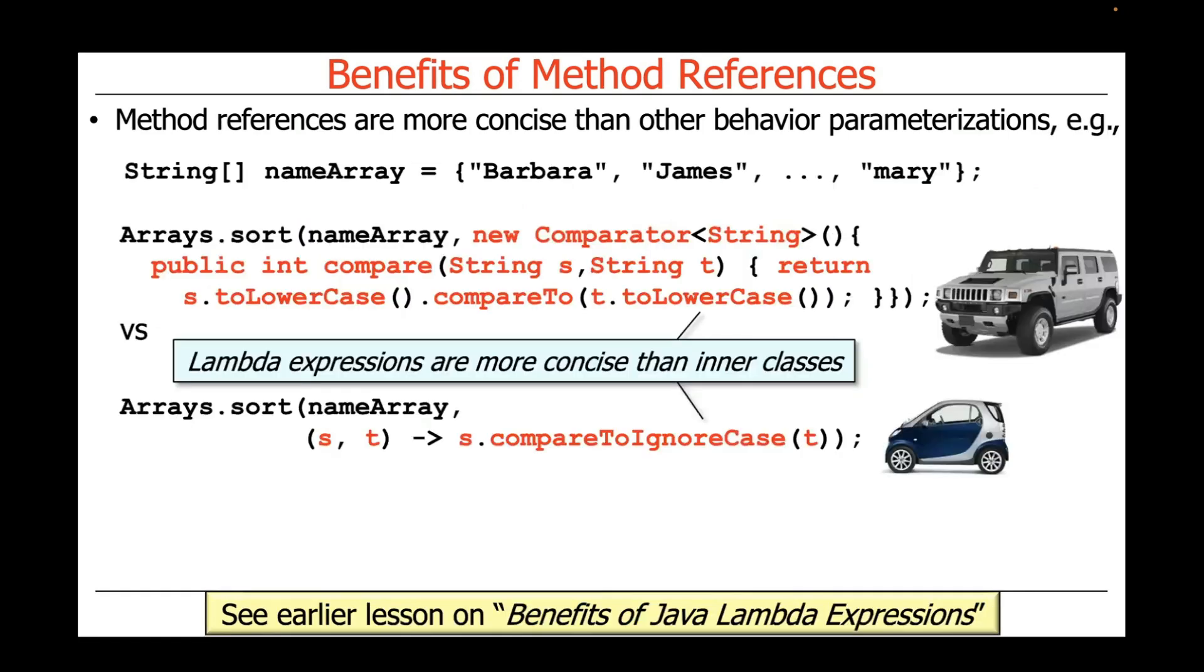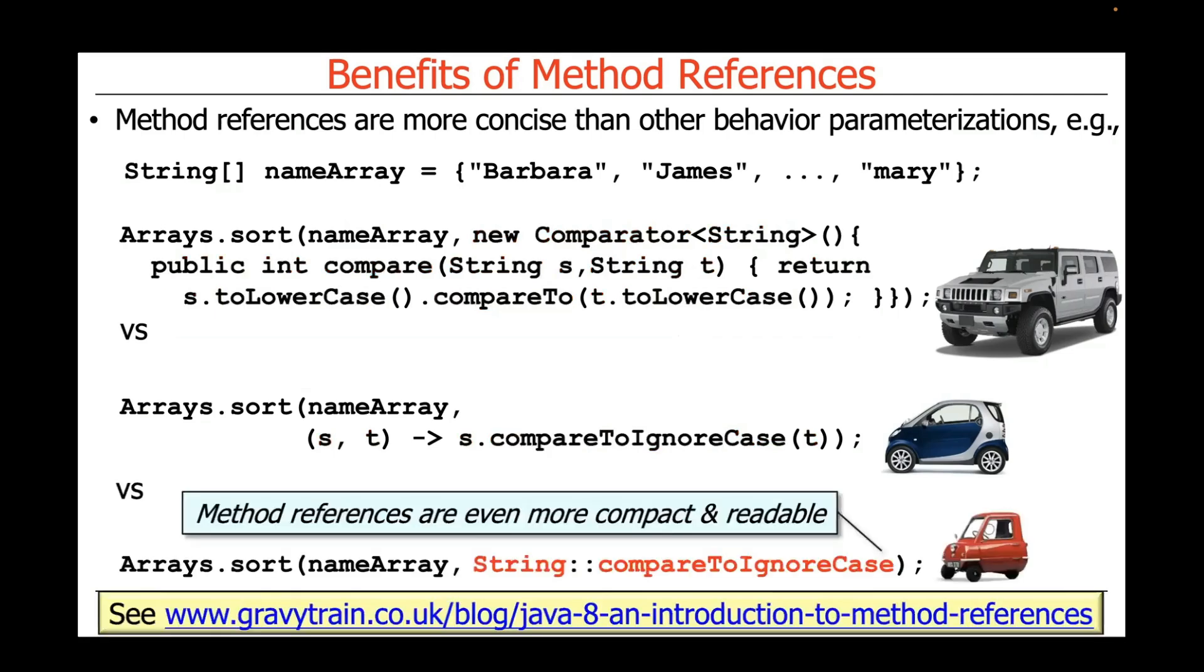Let's take a look at an example that we talked at in the previous lesson, where we were showing how you can sort an array of strings. So as we started off, we showed how Lambda expressions are more concise than inner classes because they strip away a lot of the excess syntax that's needed in order to do an anonymous inner class. However, when you compare and contrast that with a method reference, you can see that a method reference is even more compact and readable than the corresponding Lambda expression.